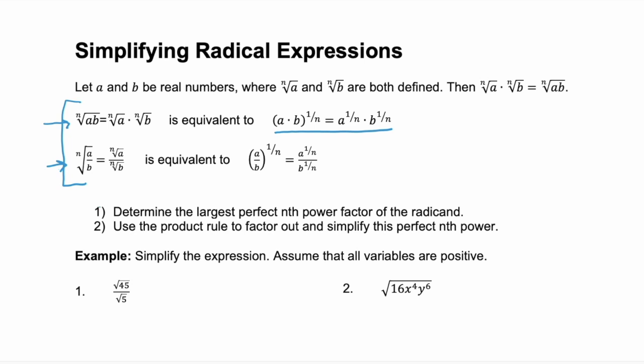Whenever you're simplifying, these two steps come in very handy. Step one is to determine the largest perfect nth power factor of the radicand. And then step two, use the product rule to factor out and simplify that perfect nth power. Let's look at some examples to see how that works.